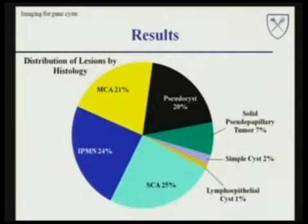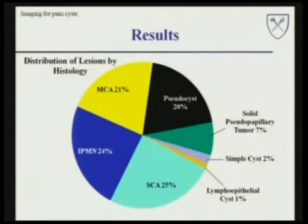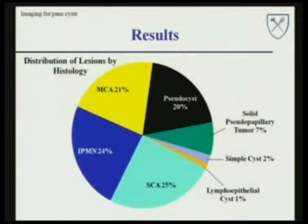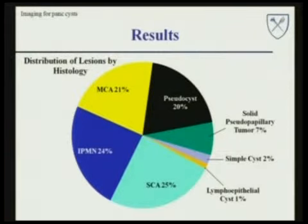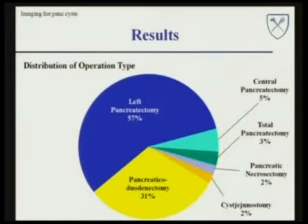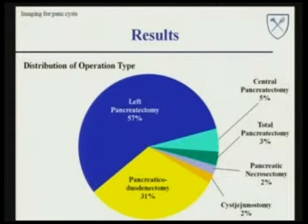Depicted in this chart is the distribution of lesions by histology. Nearly half of the patients underwent resection for mucinous tumors, including IPMN, mucinous cystadenomas, as well as adenocarcinomas. This is followed by a quarter of the study population that had serous cystadenomas and 20% of the patients that had pseudocysts. The distribution of operation type is depicted in the next chart — left pancreatectomy was the most frequent operation performed, followed by pancreaticoduodenectomy.